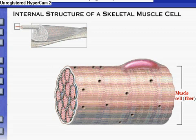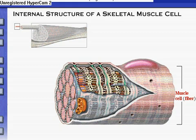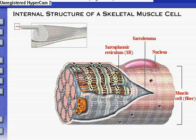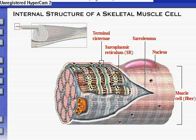Because skeletal muscle cells are elongated, they are often referred to as muscle fibers. Let's look at the internal structure of these unique cells. The nucleus is the cellular structure that contains the genetic material. The sarcolemma is the specific name for the plasma membrane of the muscle cell. The sarcoplasmic reticulum, or SR, is the name for the endoplasmic reticulum of the muscle cell. Its interconnecting tubules surround each myofibril like the sleeve of a loosely knit sweater. Terminal cisternae are sac-like regions of the sarcoplasmic reticulum that serve as specialized reservoirs of calcium ions.